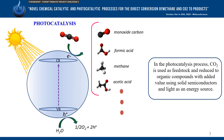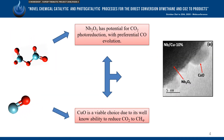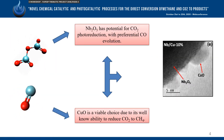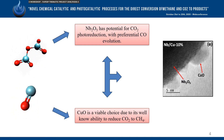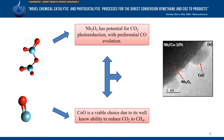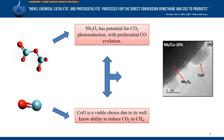In the photocatalysis process, CO2 is used as feedstock and reduced to organic compounds with added value, using solid semiconductors and light as an energy source. Niobium pentoxide has potential for CO2 photoreduction with preferential CO evolution, while copper oxide is a viable option due to its well-known ability to reduce CO2 to methane.